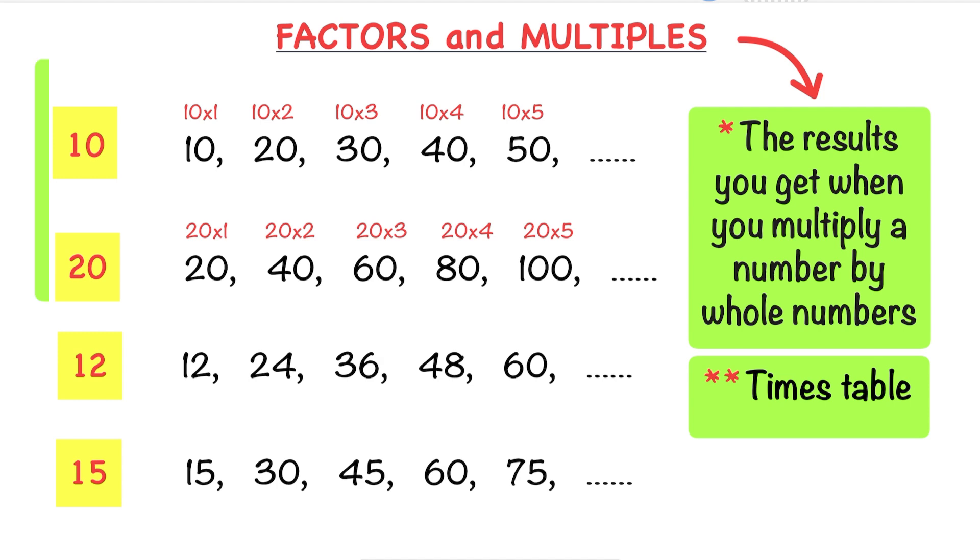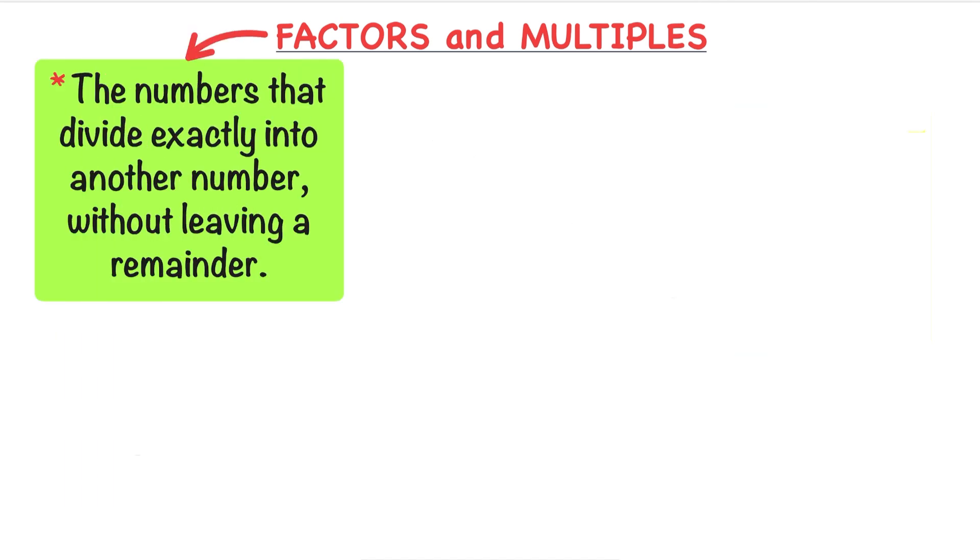Now let's move on to factors. Factors are the numbers that divide exactly into another number without leaving a remainder. Let's find the factors of 15. We need to divide 15 by numbers that wouldn't leave any remainder.